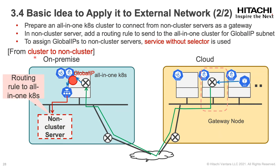For access from cluster to non-cluster, a service without selector can be used in the all-in-one Kubernetes cluster to assign a global IP to non-cluster servers. The access from a pod in the cloud cluster will be done via the service in the all-in-one Kubernetes cluster. You might not be familiar with concepts like service without selector, so I will explain it in the next slide.